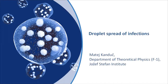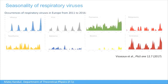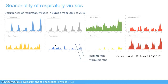Let's first look at the occurrence of respiratory viruses through seasons. Respiratory viruses can spread via droplets, and here are data for different respiratory viruses in Europe over several years. There is a profound seasonality pattern. Influenza, the most famous example, appears in colder months, fades away in warmer months, comes back the next winter, and disappears again the following summer. Seasonality is a typical property of respiratory viruses.